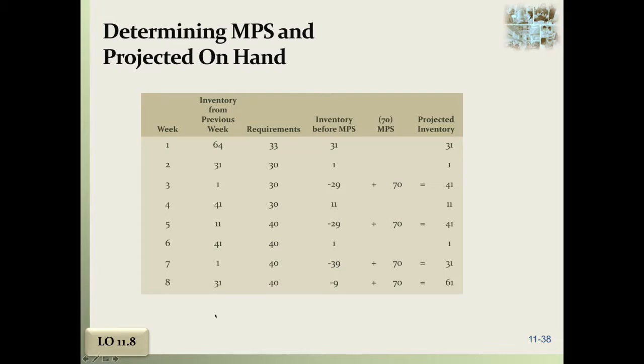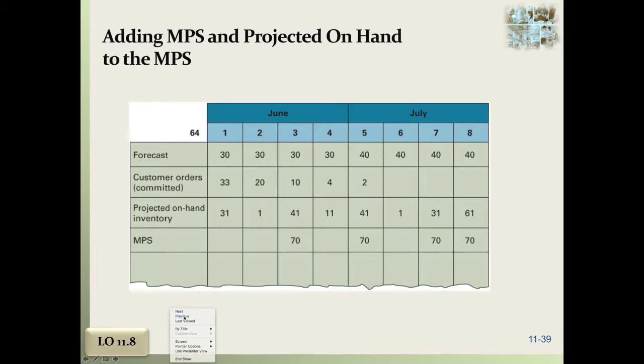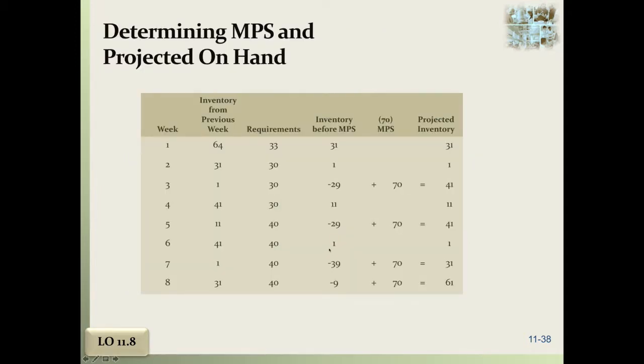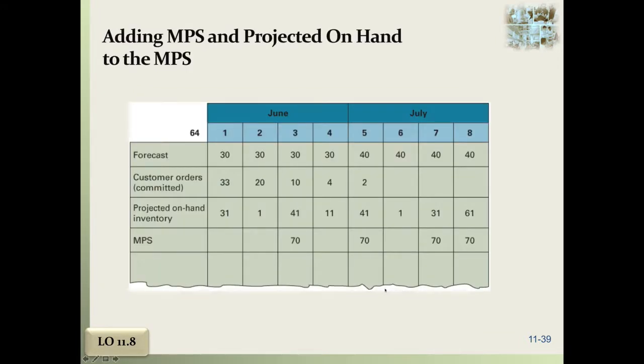If you're looking at your master production schedule and your projected on hand, it kind of breaks it out for you. This is inventory from the previous week, this is the requirements, and this is inventory before master production schedule. Our projected inventory is going to be 31, then 1. In our master production schedule, we're now going to be making 70 in week three. So that will give us 41 inventory. Then we take our inventory forecast, we have 11, and you've got 70, so you've got 41 here, you've got another 40. You're just kind of carrying it over.